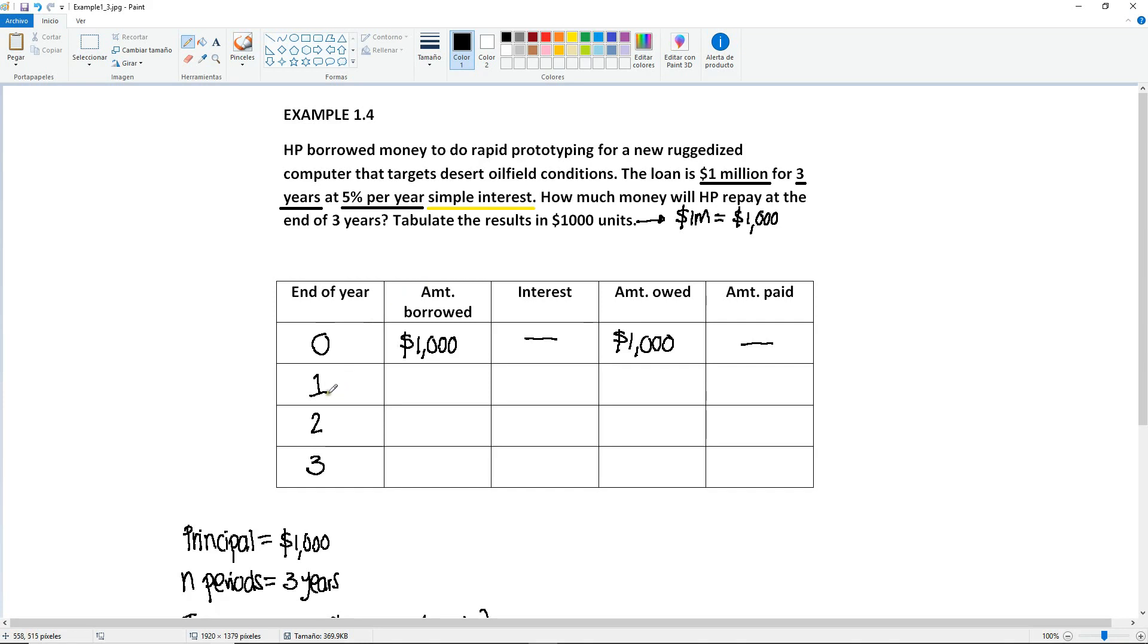When year one ends, so one year has passed, nobody borrowed money here. So the money was only borrowed once at the very beginning. So no borrowing of money, but now we're gonna start accruing interest.